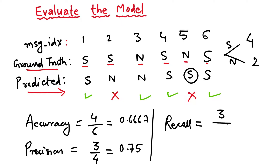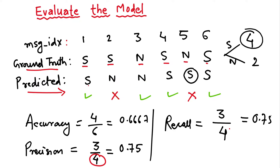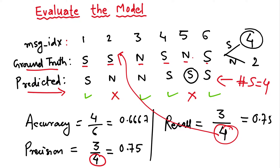For recall, the numerator is the same — 3, since the model predicted 4 as spam and 3 of those are correct. The denominator is the actual number of spam messages, which from the ground truth is also 4. So recall is 3 by 4, or 0.75. Note that although both denominators are 4, they come from different places: one from the predicted dataset count, the other from the ground truth.